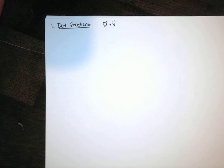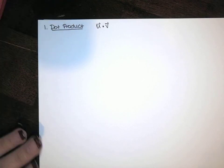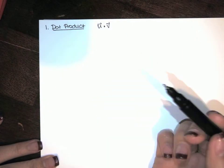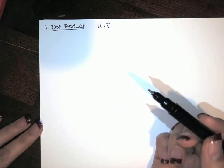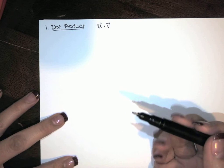This video is about the dot product of two vectors. We're going to look at what dot product is algebraically, and then geometrically. Basically we have two definitions that will get us to the same answer: one is in terms of the components of two vectors u and v, and one is in terms of the lengths of u and v and the angle between them.